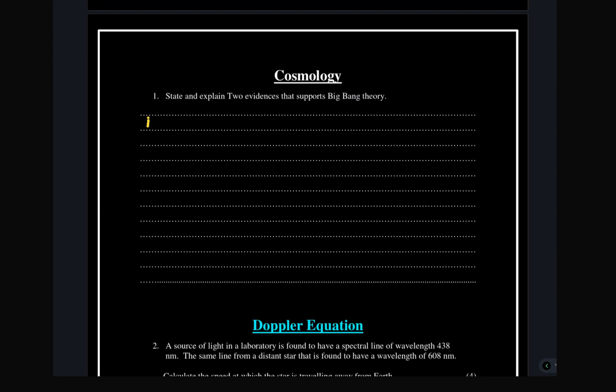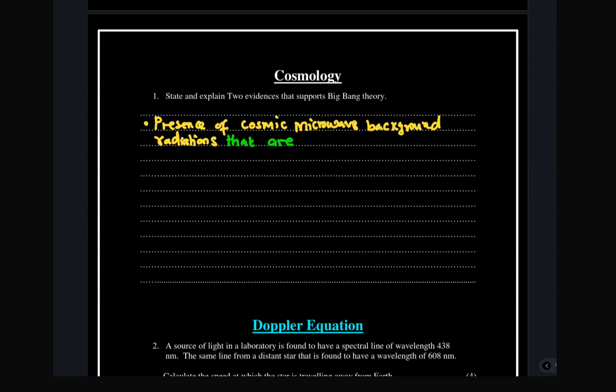Cosmology is a topic that deals with how the universe originated — it talks about the origin of the universe. According to the specification we are going to base our discussion on big bang theory. If you are asked to state and explain two evidences that support big bang theory, the first evidence is the presence of cosmic microwave background radiation, which is everywhere and spreading in all directions, and it may have been created during the big bang.